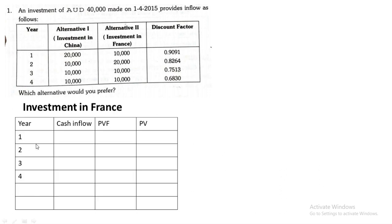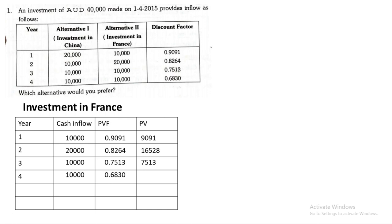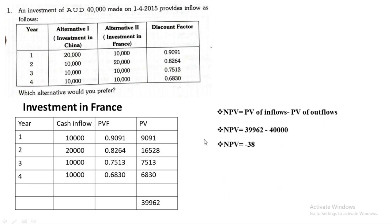For France, the cash inflows are 10,000; 20,000; 10,000; and 10,000. The same discounting factors apply: 0.9091, 0.8264, 0.7513, and 0.6830. Multiplying gives present values of 9,091; 16,528; 7,513; and 6,830. Totalling these gives 39,962. Applying the NPV formula: 39,962 minus 40,000 gives a negative NPV of −38.